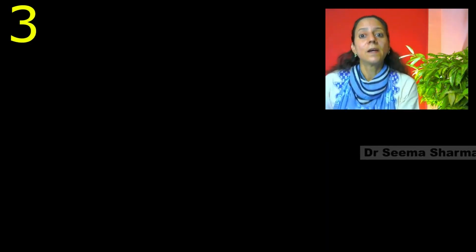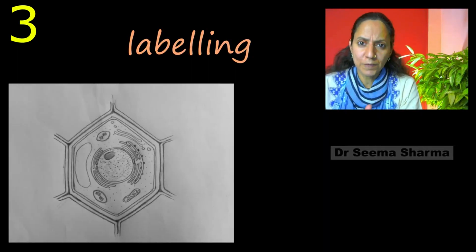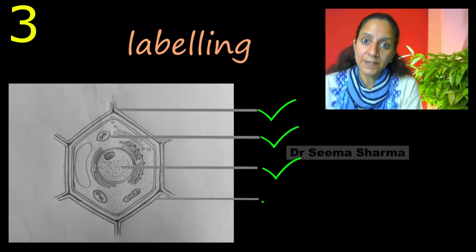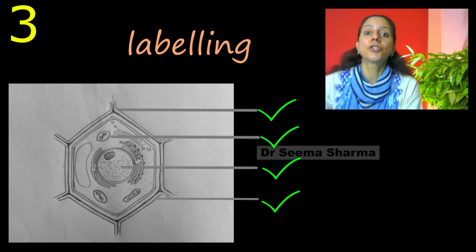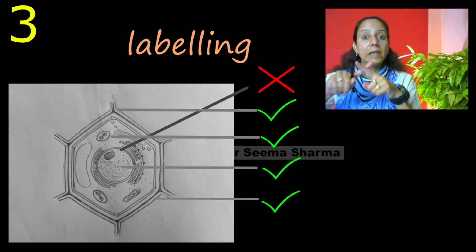Third thing is while labeling, most of the labeling should be towards the right hand side of the diagram and there should be no crisscross labeling.